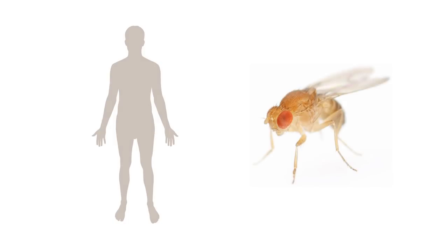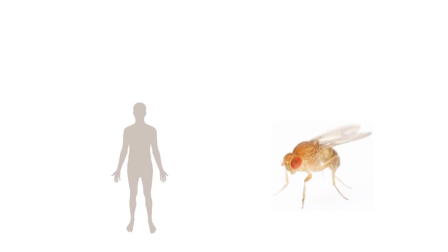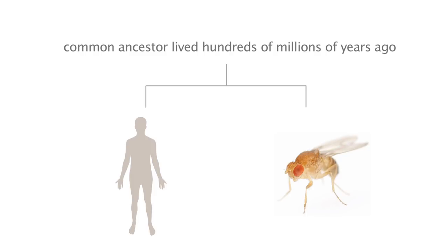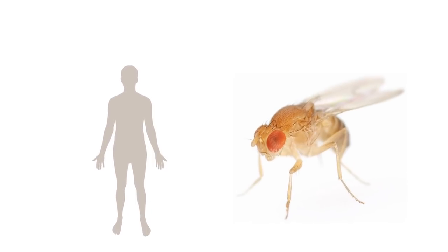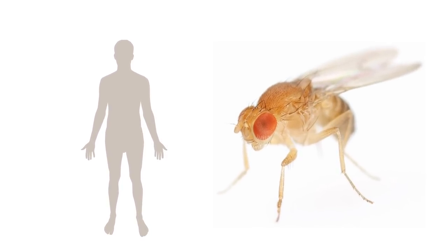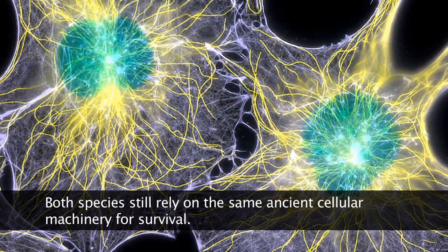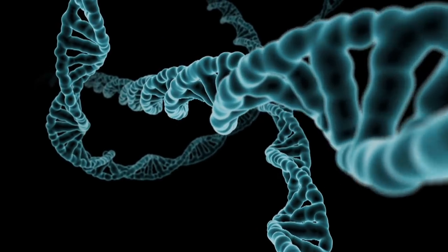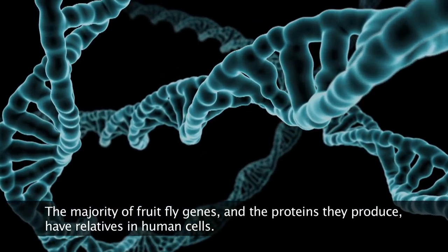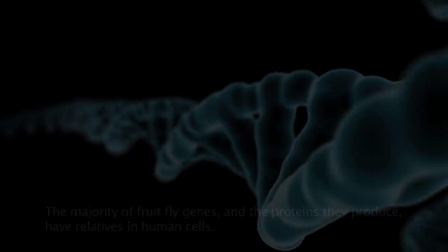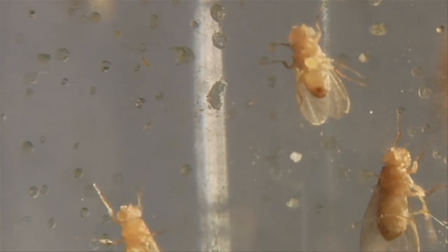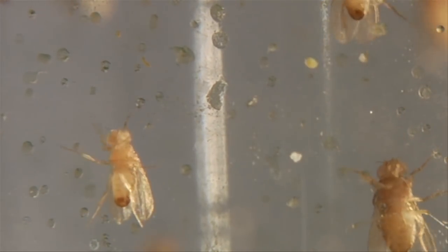Humans and fruit flies are both descended from a common ancestor, an animal that lived hundreds of millions of years ago. In many, if not all cases, both species still rely on the same ancient cellular machinery for survival. In fact, thousands of fruit fly genes — one could say the majority of fruit fly genes and the proteins they produce — are relatives in human cells. When we make discoveries about fruit fly genes and proteins, we can often apply that information to humans.